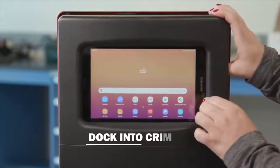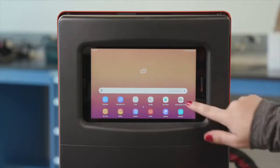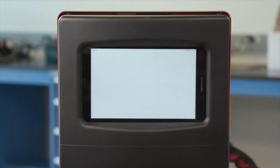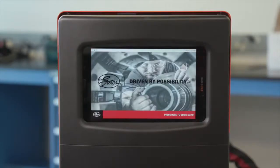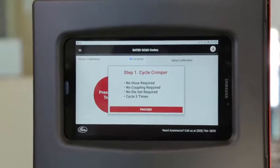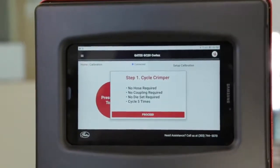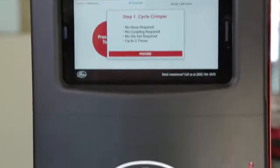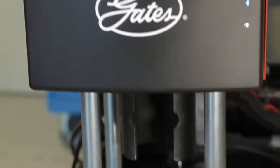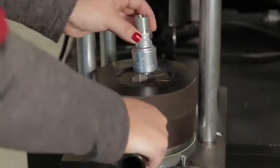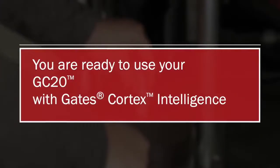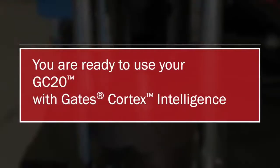Connect the tablet to your Wi-Fi network, open the Gates Cortex crimp app, and follow the on-screen prompts for the tablet setup. You'll need to perform the setup calibration, which might take two or three calibration crimps with an 8G coupling, so have a few nearby. After you complete the setup calibration, you are ready to use your brand new GC-20 with Gates Cortex Intelligence.